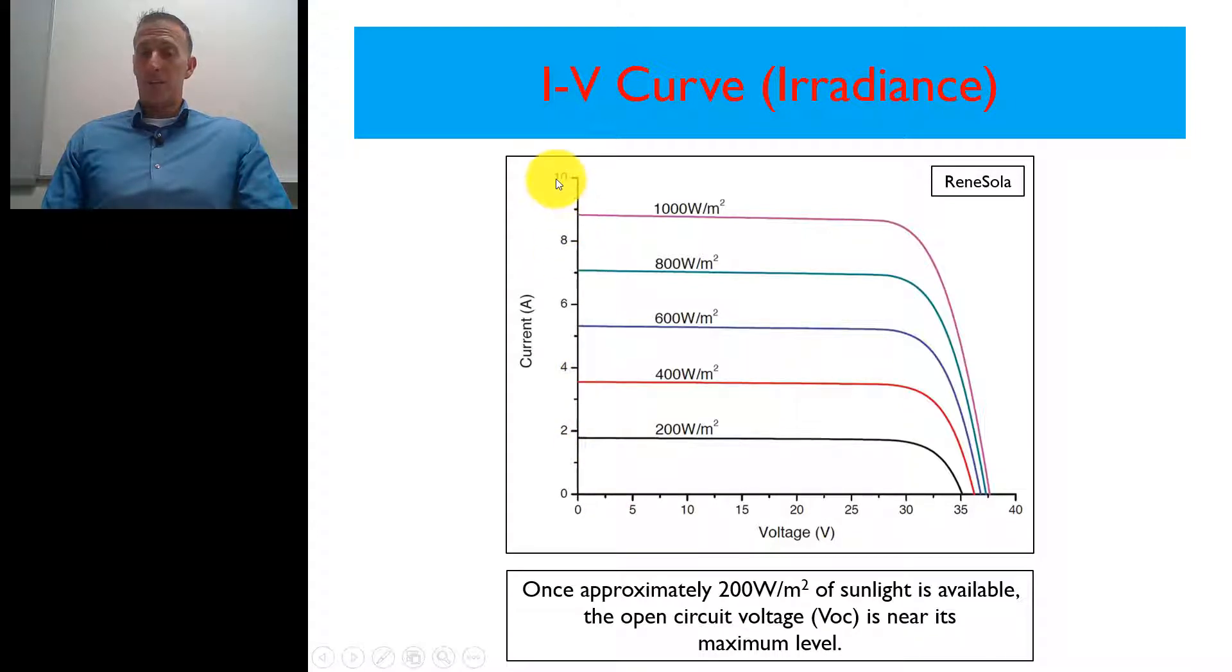Now this is off a spec sheet of a Rennes solar module. These are the modules that we have on a training system that we have here at the Southwest Technical College. And this is showing us the output. So you can see right here, this information, these different colored lines are actually the amount of irradiance that is provided by the sun, and it shows us the different output of current and voltage.